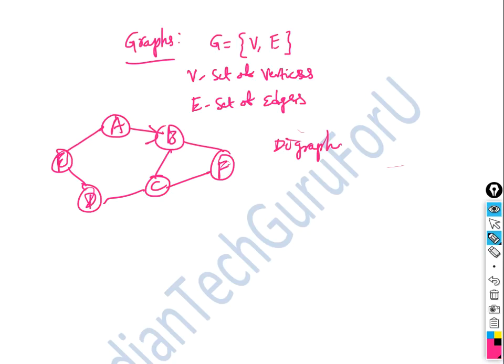A graph example with edges: A to B, B to C, C to F, F to E, C to D, D to E, E to A. Graphs with directions are called a digraph, or directed graph.